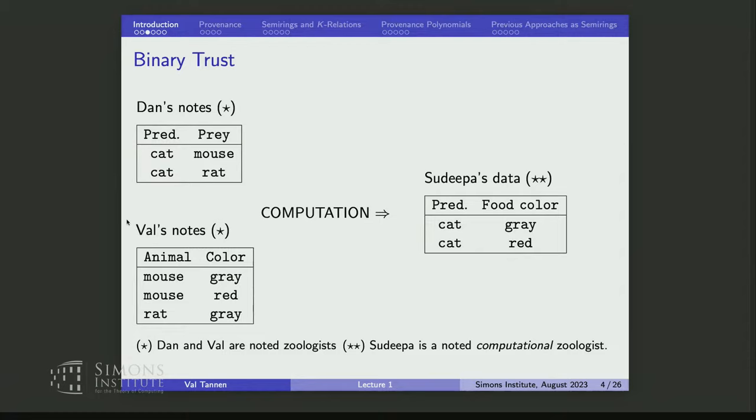in order for, let's say, a bunch of scientists who exchange information to understand how to deal with each other. I will explain with, I hope, not too simplistic example. So let's say that I can only take in vain the name of a few people, but I feel comfortable with Dan and Sudipa. So let's say that Dan and Val are zoologists who just collect information.